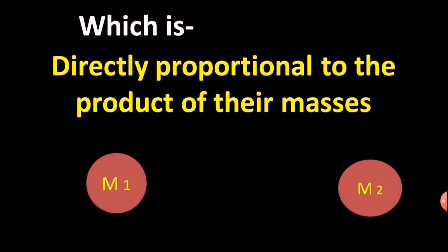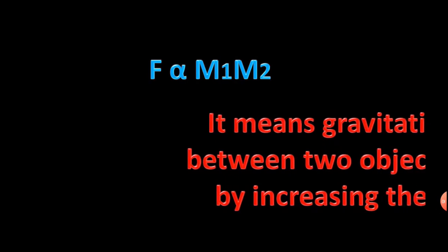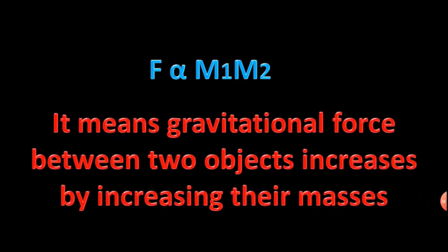If two masses are M1 and M2, then F is directly proportional to the product of M1 and M2. It means gravitational force between two objects increases by increasing their masses.